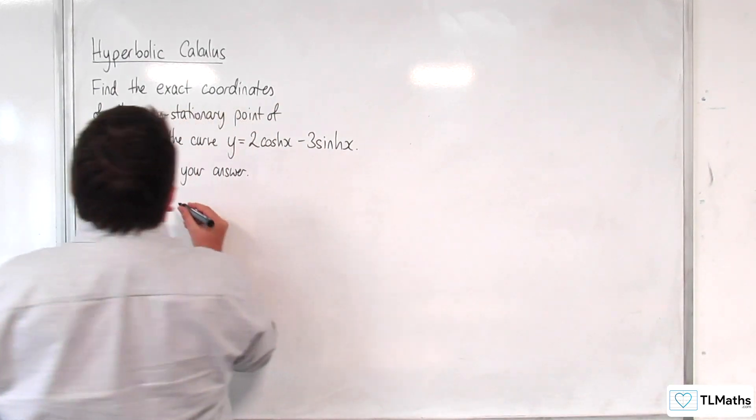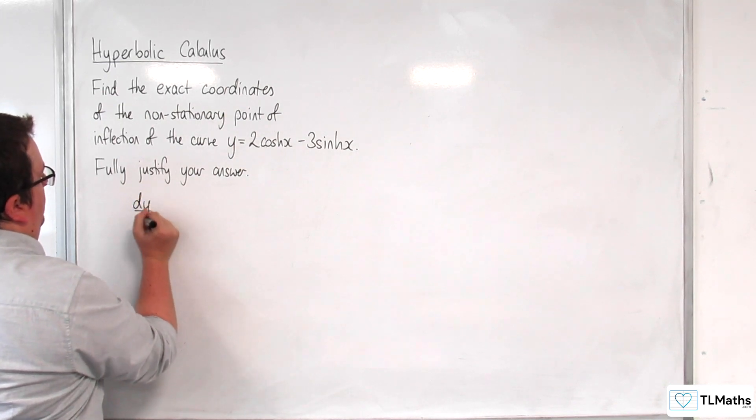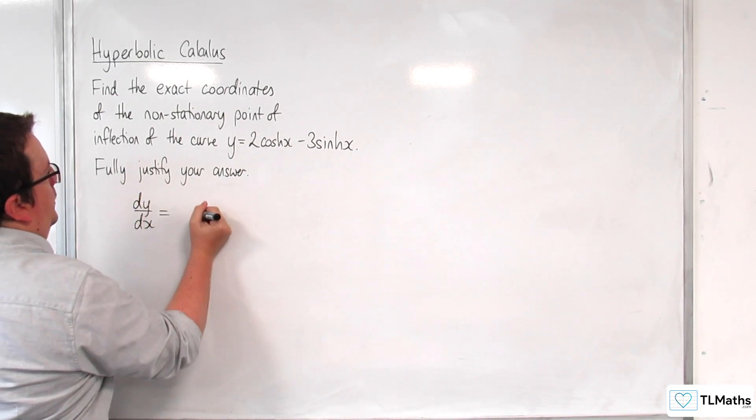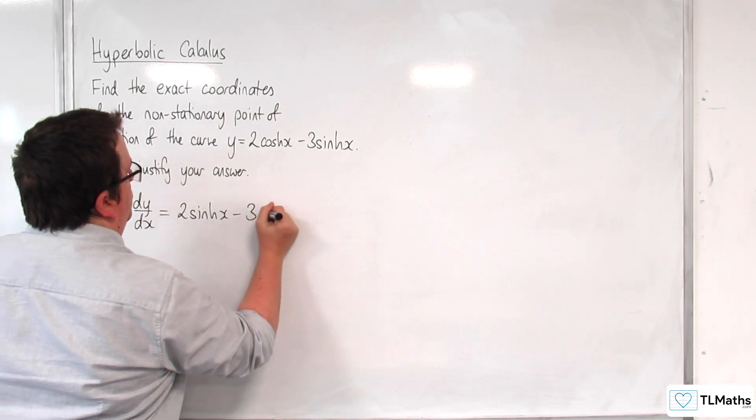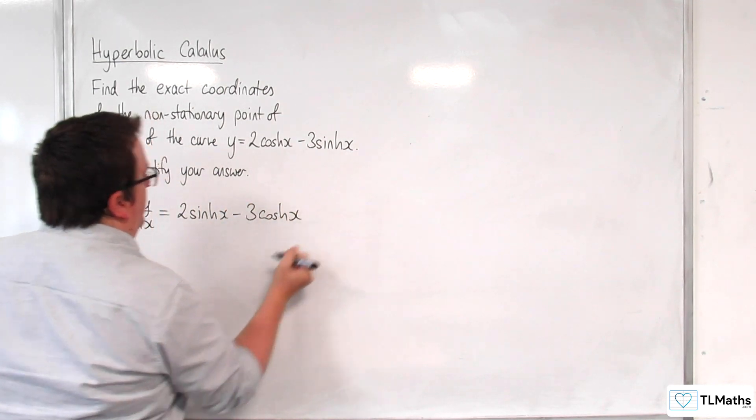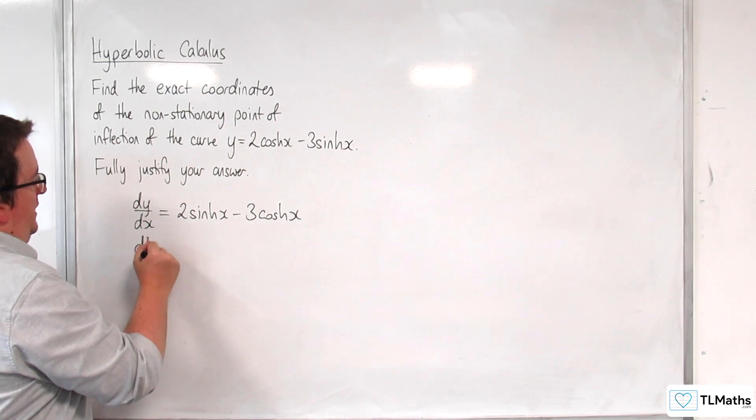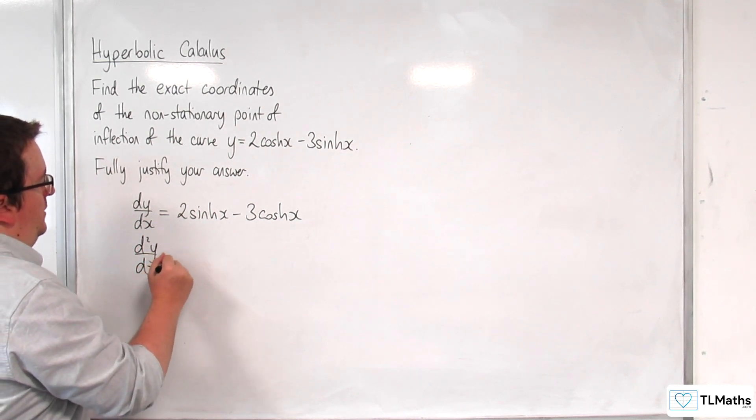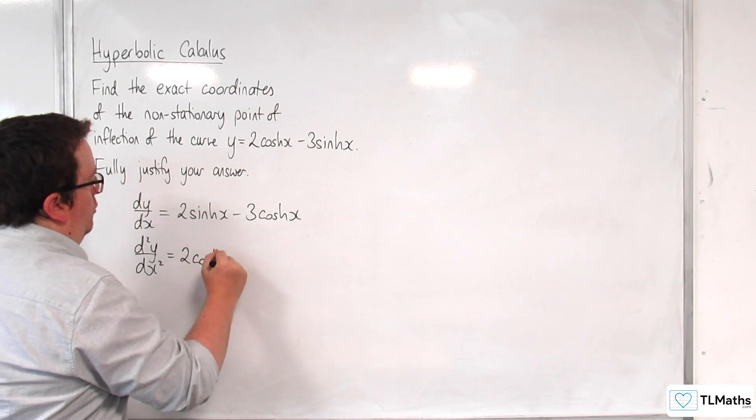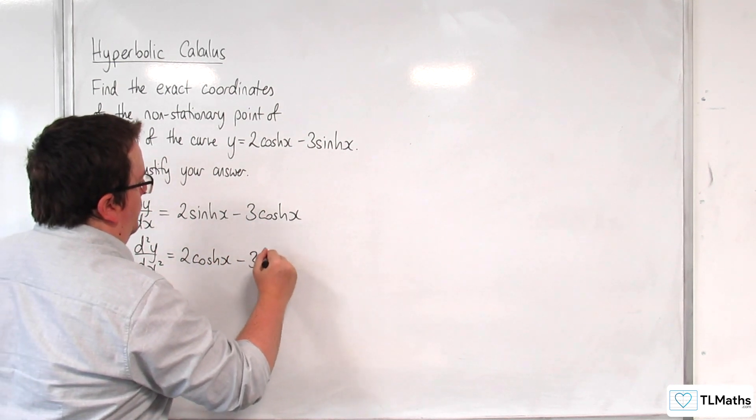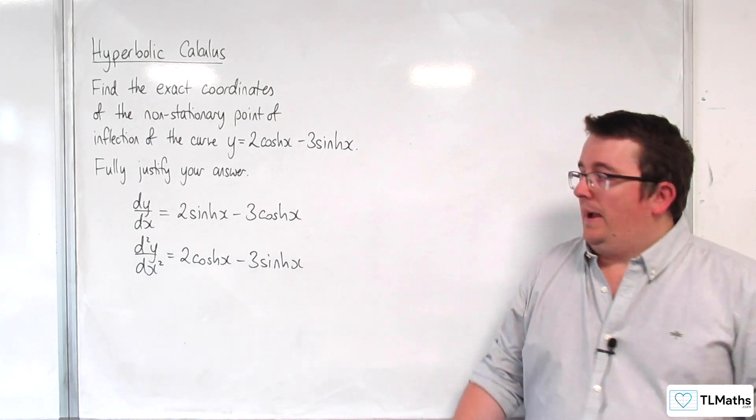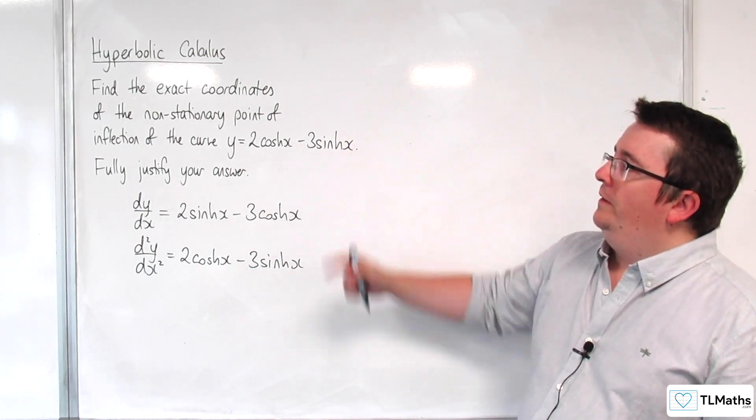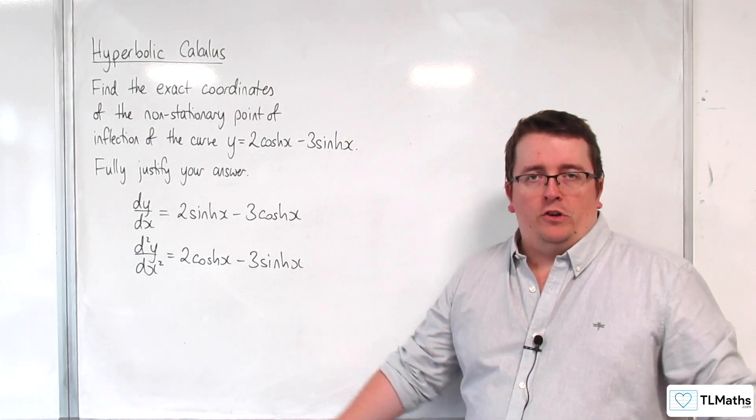So let's find dy/dx, and so that will be 2sinh(x) take away 3cosh(x), and d²y/dx² will be equal to 2cosh(x) take away 3sinh(x). So funnily enough we get back to our original equation through differentiating twice.